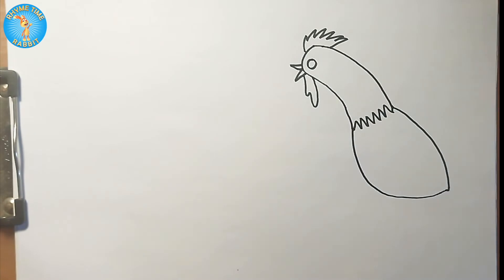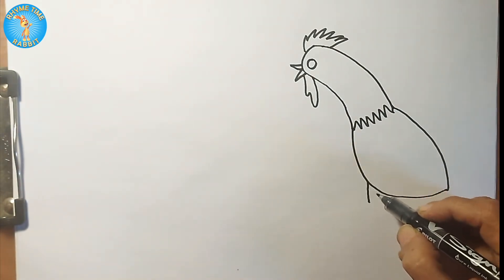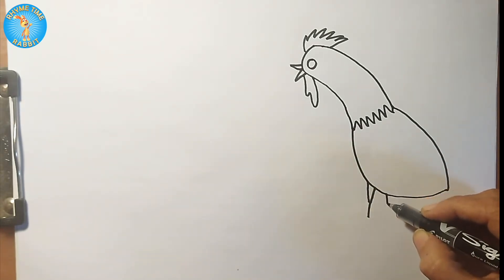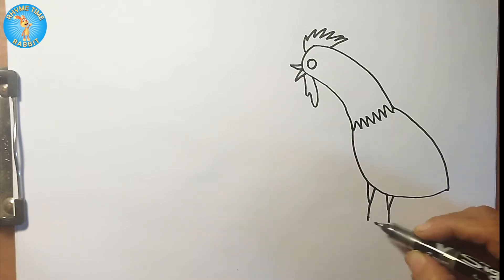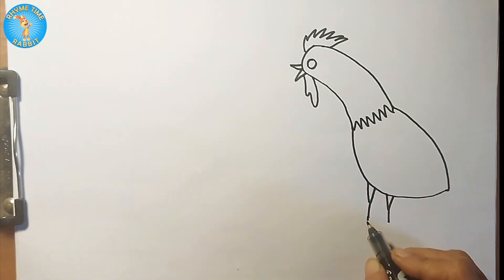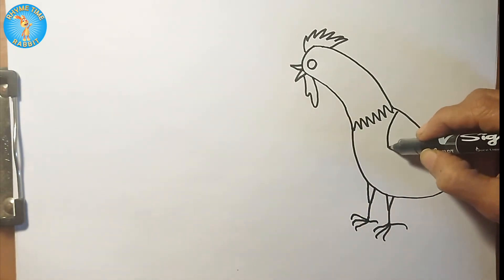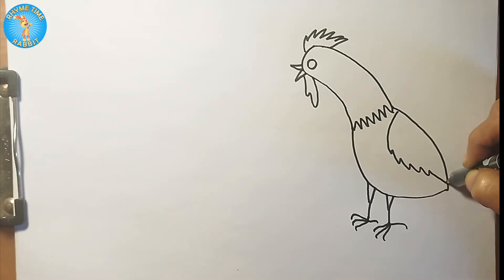Here goes for the legs - make a Y, another Y. One, two, three, one at the back. Likewise with the other leg - one, two, three. And let us do the wing part, so we will do the tail.